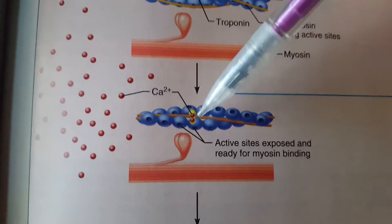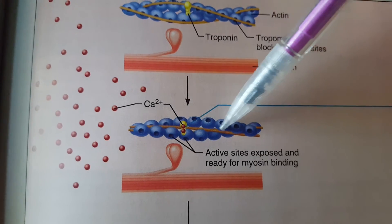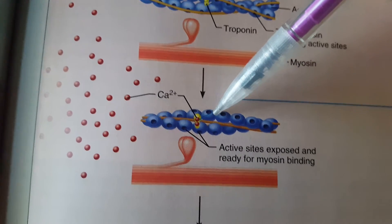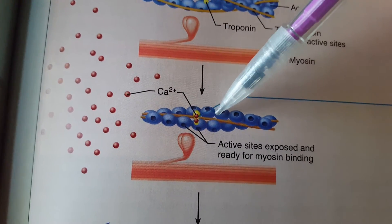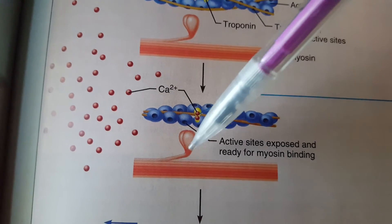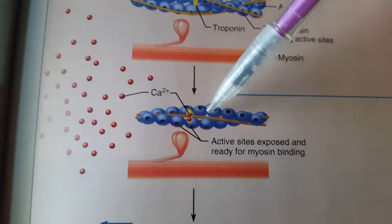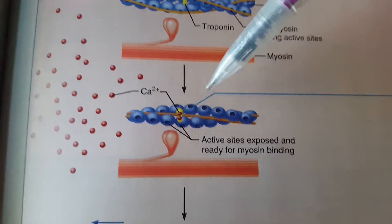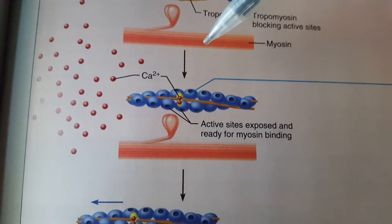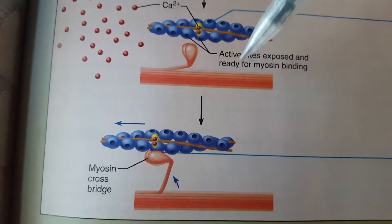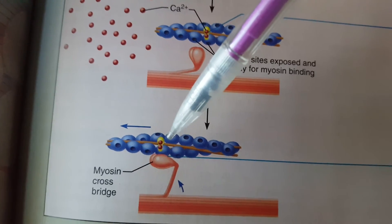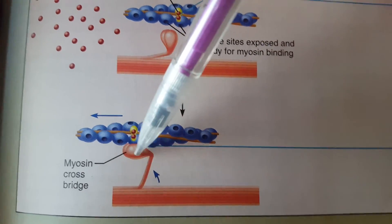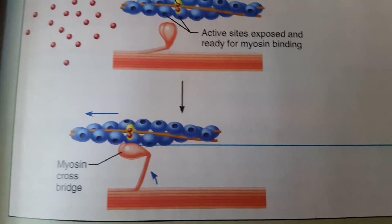When calcium is released into the sarcoplasm, we can see calcium bind to troponin. When it binds to troponin, that changes the shape of troponin, pulling tropomyosin off of the active sites on actin and exposing those active sites. This allows actin and myosin to bind together. So calcium is one of those really important molecules for excitation-contraction coupling. With those active binding sites on actin exposed, actin and myosin can bind together.